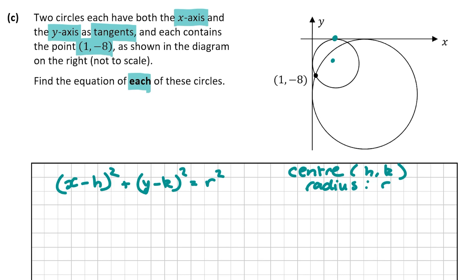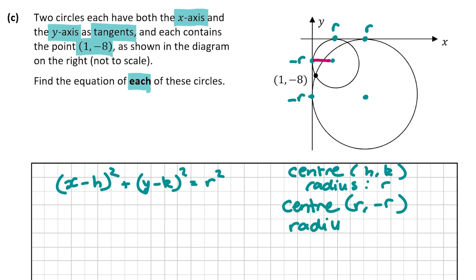So if the radius is r, the centre is going to be (r, minus r). For example, if r is 2, the centre is (2, minus 2); if r is 6, the centre is (6, minus 6). The y-coordinate is negative because the circle is below the x-axis. The radius r extends from the centre to the tangent on each axis, so the centre is (r, minus r) and the radius is r for both circles.